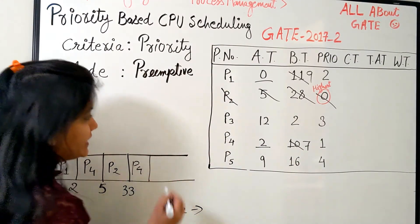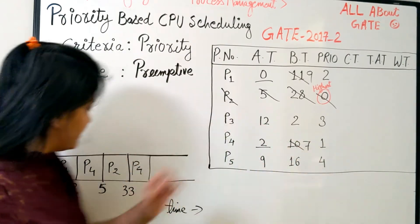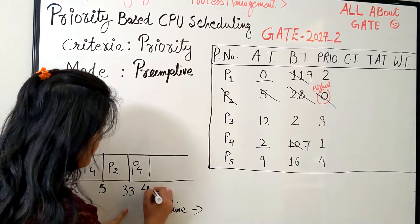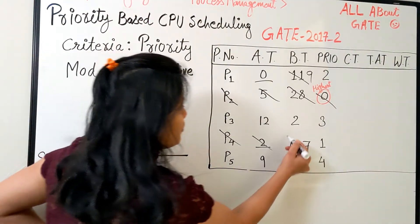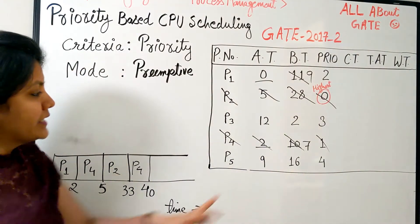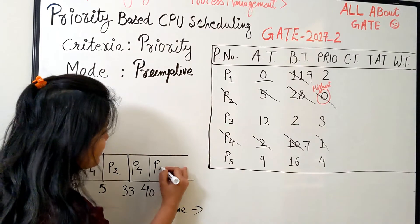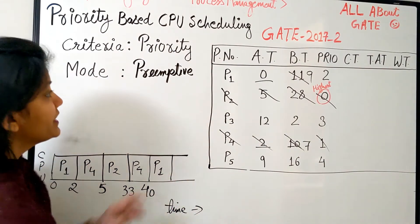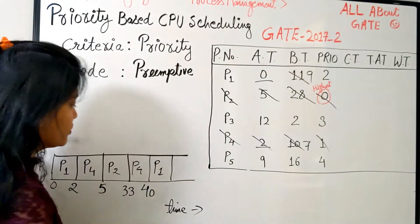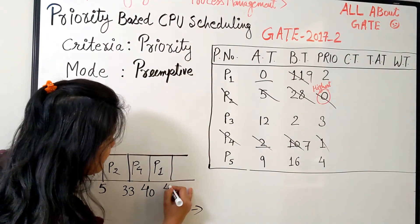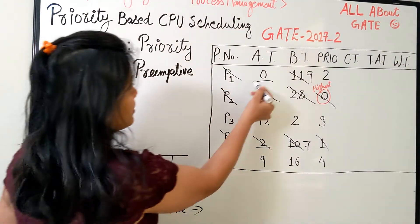How much does P4 need? It needed 10, now it's 7. So 33 plus 7 equals 40. P4 finished completely. The next highest number is 2, which means P1 to be scheduled. So here we go, P1. P1 needs 9 remaining, so 40 plus 9 is 49. It also got finished.